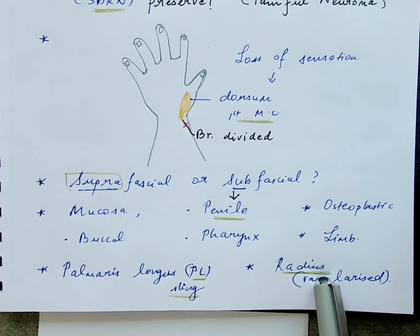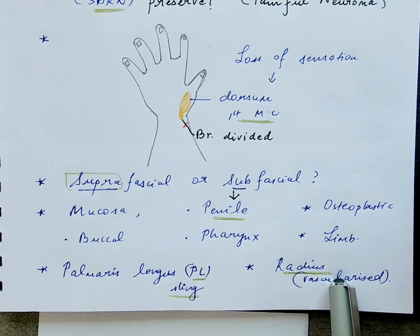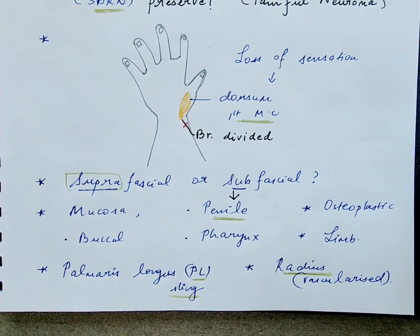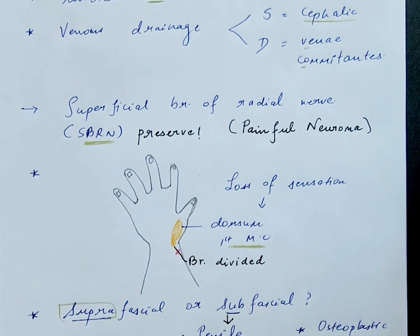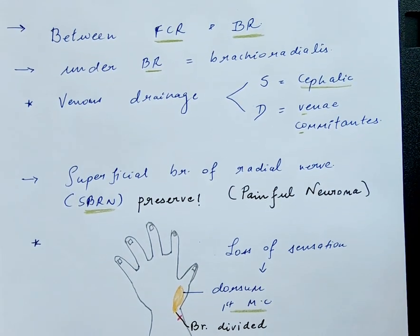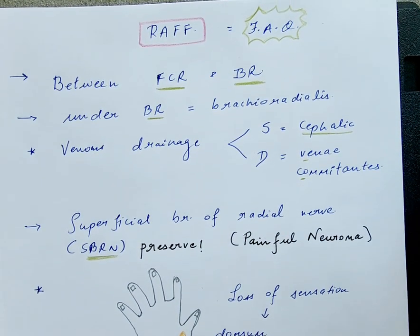Remember, the whole length and circumference of the radius will not be harvested as it will compromise forearm integrity. You can take up to one-third of the circumference and half the length of the radius for osteoplastic reconstruction. This covers the landmarks, harvest details, and variations used in the radial artery forearm flap. In the next video we will see the flap markings.